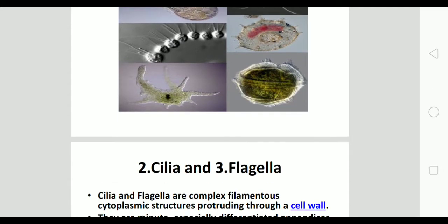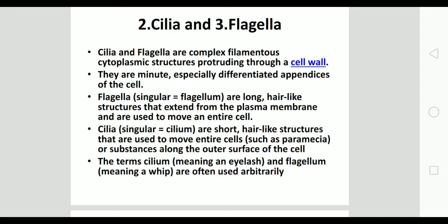Cilia and flagella are complex filamentous cytoplasmic structures protruding out of the cell. They are minute, specially differentiated appendages of the cell. Flagella are long, hair-like structures which extend from the plasma membrane and are used to move the entire cell — the singular form is flagellum. Cilia are also hair-like but short, and are also used to move the entire cell — for example in Paramecium. The singular form of cilia is cilium.